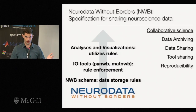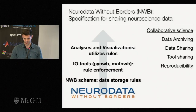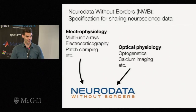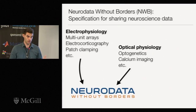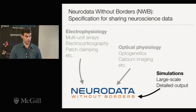This will enable collaborative neuroscience, data archiving, sharing, tool sharing, and reproducibility. The core of NWB is really focusing on E-Phys and O-Phys. But I'm going to talk about how we're using the extension framework to actually expand the scope of the format to store simulation data.